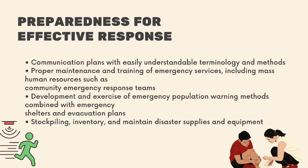Preparedness for effective response. Preparedness measures can take many forms, including the construction of shelters, installation of warning devices, creation of backup lifeline services including power and water, and rehearsing evacuation plans. We have four common preparedness measures: communication plans with easily understandable terminology and methods; proper maintenance and training of emergency services including community emergency response teams; development and exercise of emergency population warning methods combined with emergency shelters and evacuation plans; and stockpiling, inventory, and maintenance of disaster supplies and equipment.